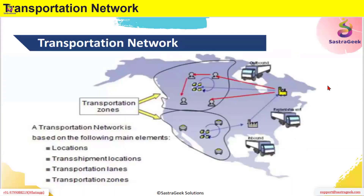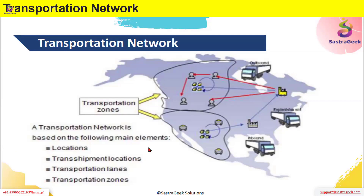A transportation network is based on the following main elements. We've been introduced to locations — which could be a plant, distribution center, or customer — and there are many other location types we'll see in transportation management. The network also comprises transshipment locations, which are places where certain transportation support activities happen, such as border crossing, change of containers, coupling and decoupling activities, or ports.